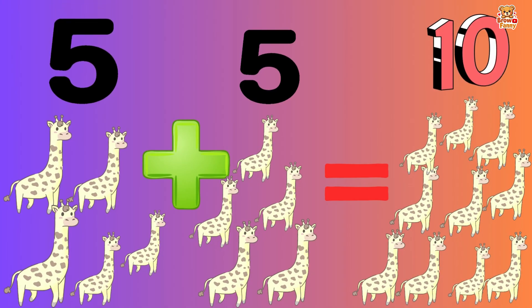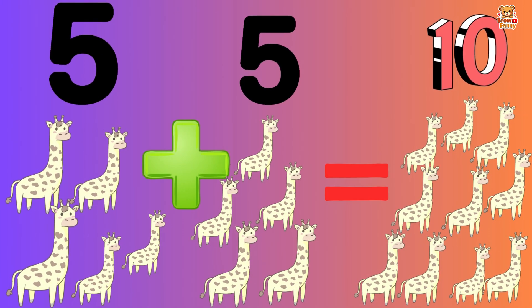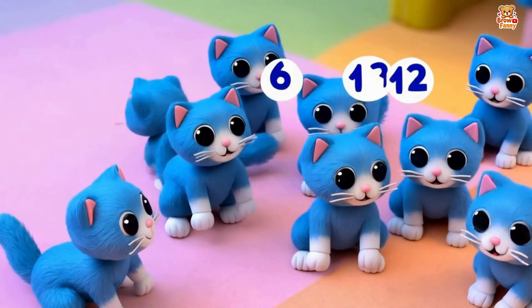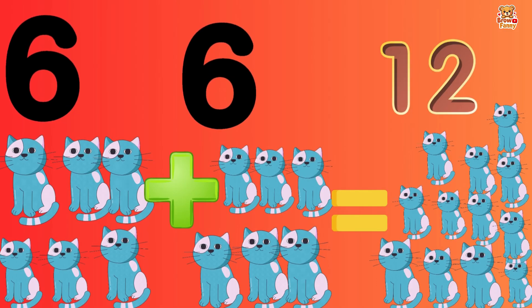Counting up, it's easy as can be. Just add them up and count with me. Six blue kittens purring with glee, add six more friends and we've got a kitten spree. Now we've got twelve blue kittens playing all night, counting up with all our might.